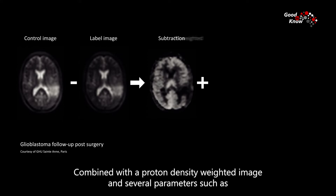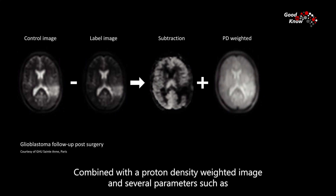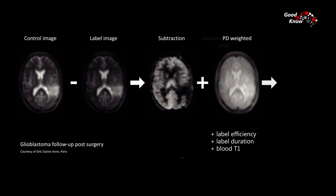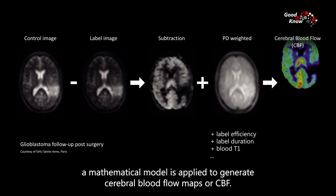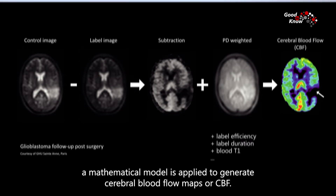Combined with a proton density weighted image and several parameters such as labeling efficiency, labeling duration, and blood T1, a mathematical model is applied to generate cerebral blood flow maps, or CBF.